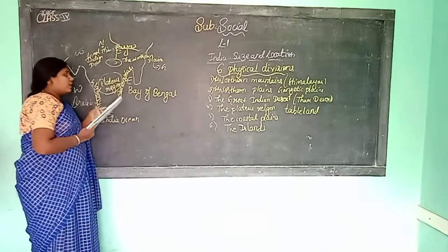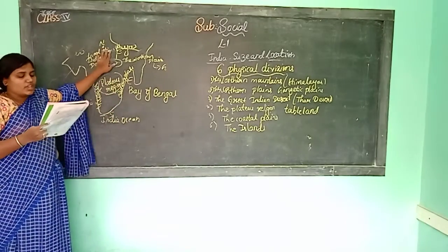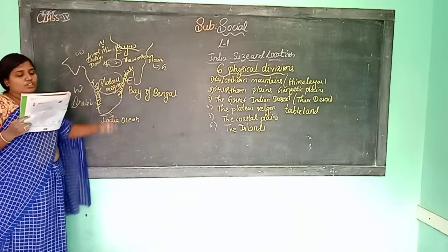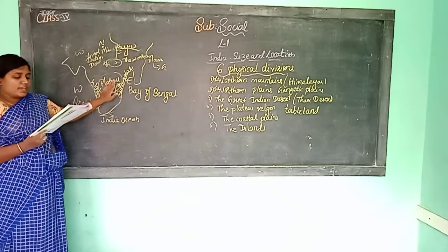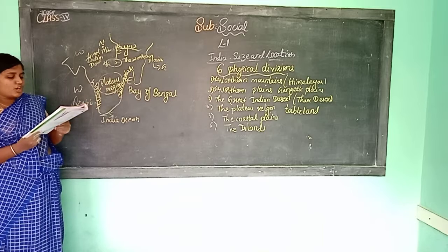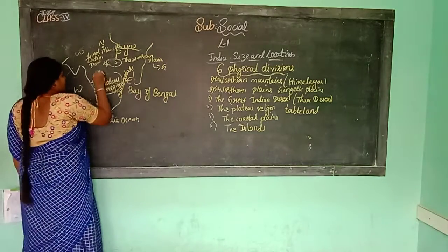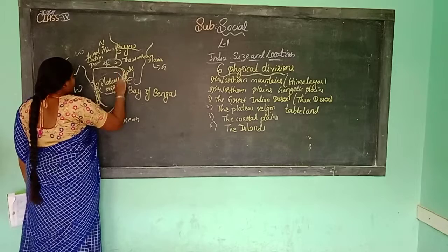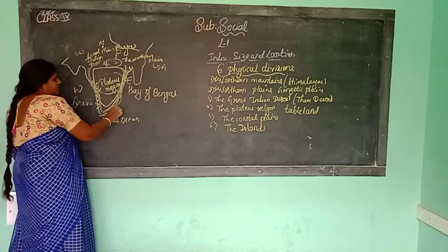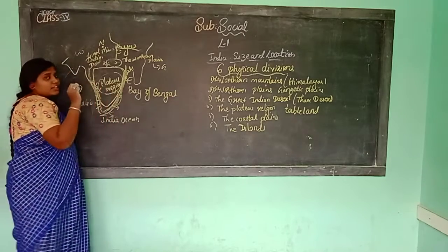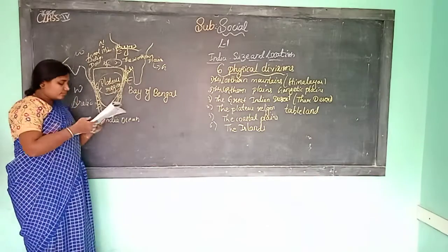There is also a mountain range in the north of the Plateau Region. Next, on the western and eastern sides of the Plateau are the Coastal Plains, bordered by the Eastern Ghats and Western Ghats. The coastal plains lie along the sides of the plateau region.